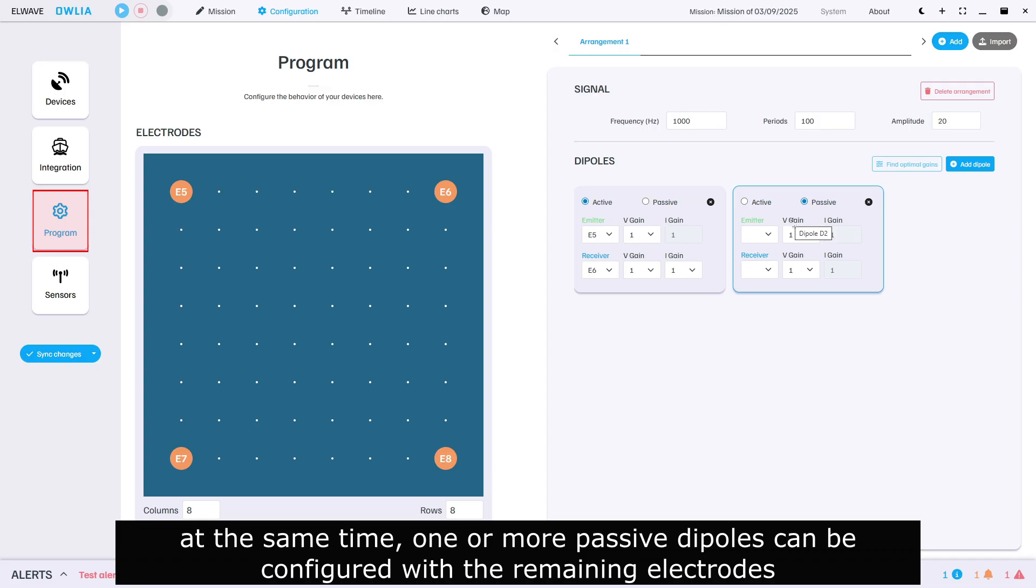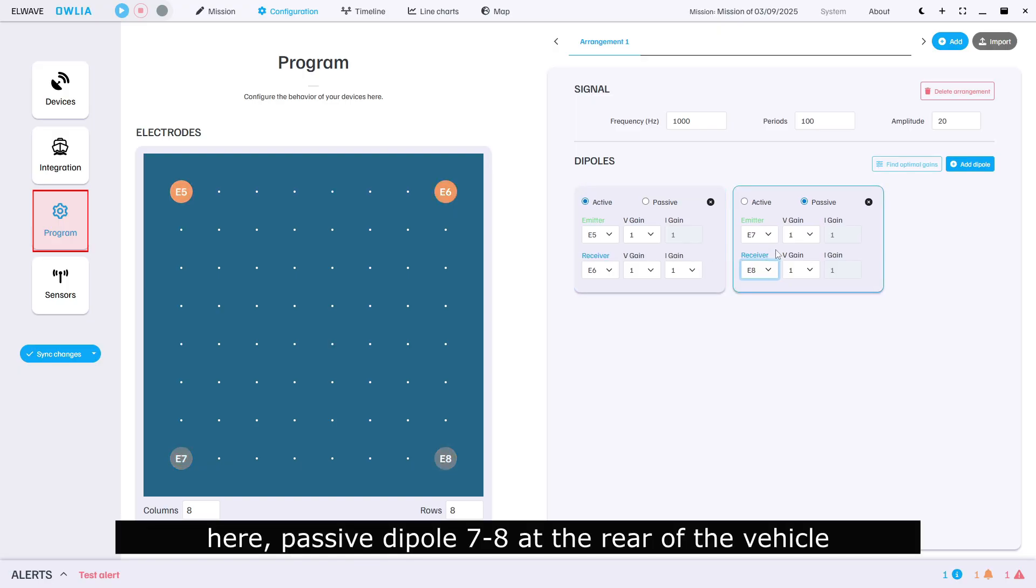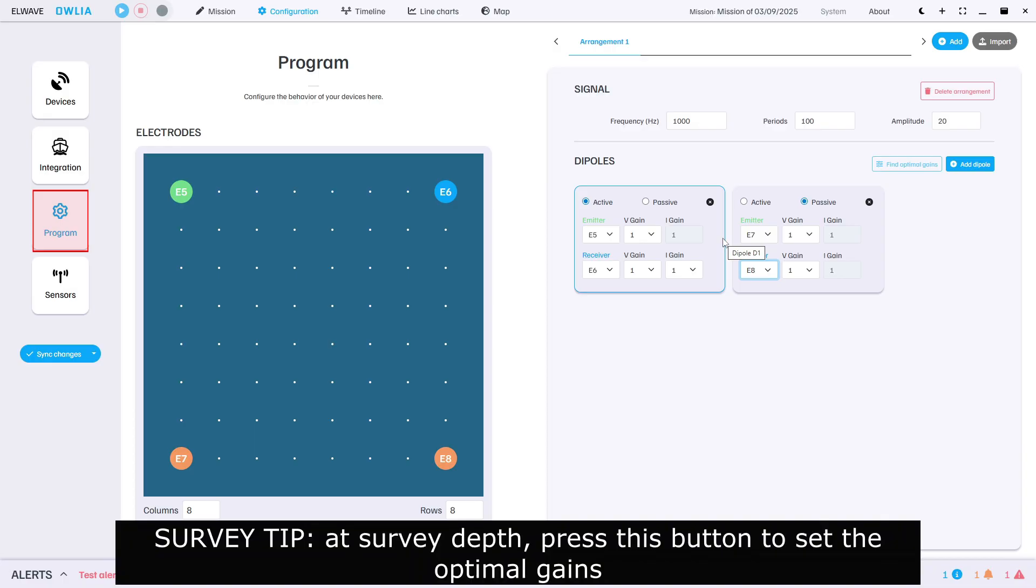At the same time, one or more passive dipoles can be configured with the remaining electrodes. Here passive dipole seven to eight at the rear of the vehicle. Survey tip: at survey depth, press this button to set the optimal gains.